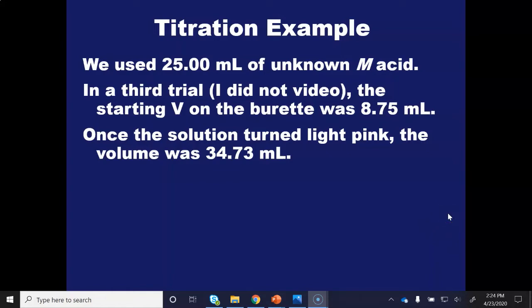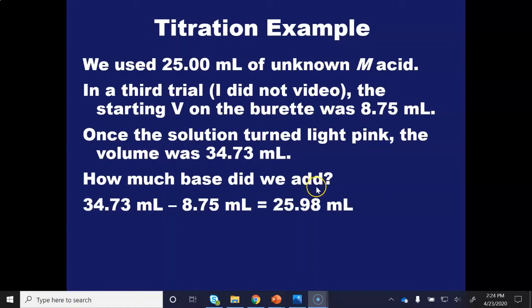So how can I use these two numbers to find the volume of base that I added? Well, that's essentially just a subtraction problem. I didn't start at 0.00 milliliters because there wasn't any reason to put 50 milliliters of solution in there. I don't need to waste the sodium hydroxide. So I'll take my ending volume and subtract where I actually started, and that gets me 25.98 milliliters. And so that's the same process you would use for any titration to determine the milliliters of titrant that you add. You subtract the initial volume from the ending volume.